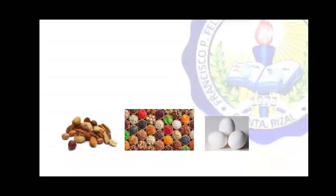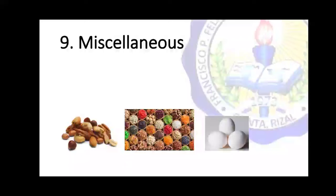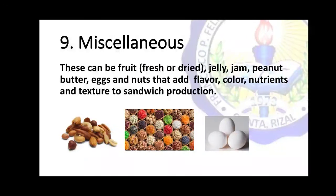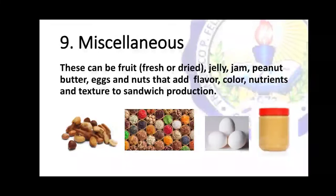The last ingredient is miscellaneous. This can be fruits — fresh or dried — jelly, jam, peanut butter, eggs, and nuts that add flavor, color, nutrients, and texture to sandwich production.